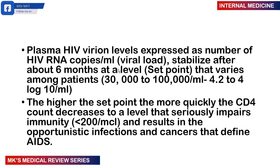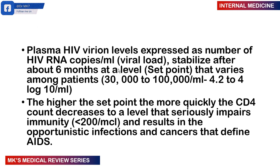How does HIV progress? There are four main groups. You can fall under one of these in terms of the natural progression of the disease. You have the rapid progressors — accounting for 15% — who quickly develop opportunistic infections and die within two to three years. You have the normal progressors — 80% of people — who remain healthy for roughly about six to eight years before having overt clinical manifestations. You have the long-term survivors.